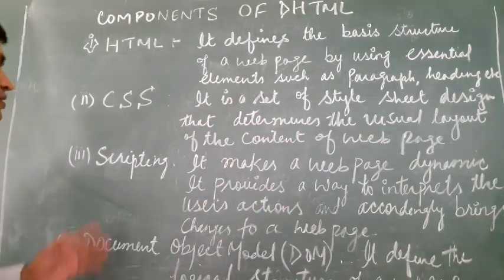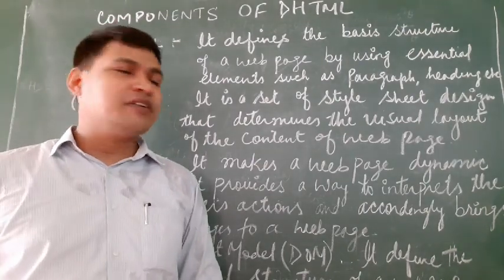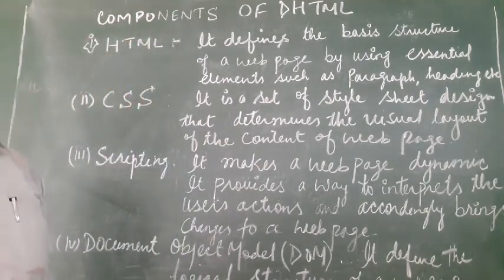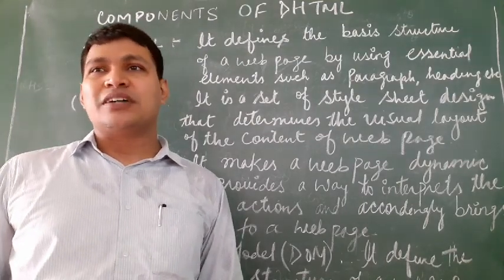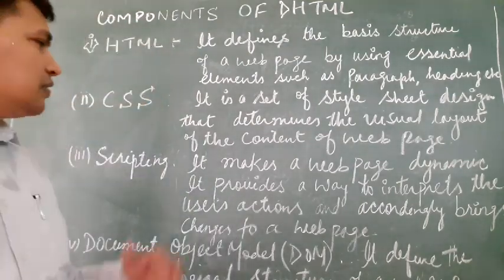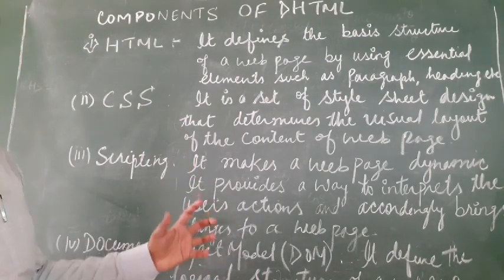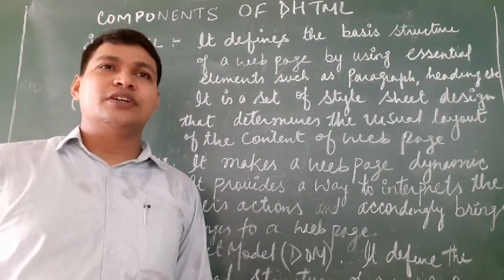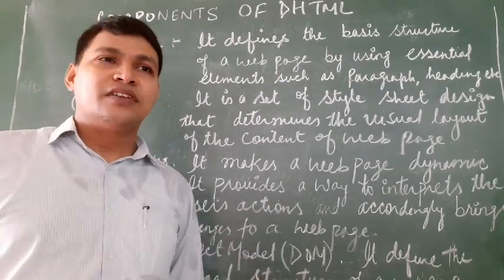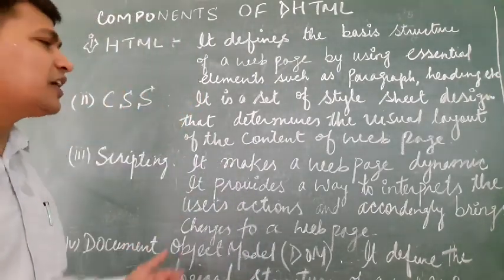The next thing is the scripting language. Scripting language means the language that we use for description. There is Java, PHP, and ASP. These are scripting languages that we use in DHTML documents. It is used to make the page dynamic. In a static page, there is no modification in the content. In a dynamic page, you can see modification in the content.